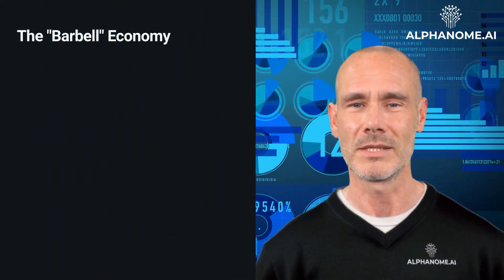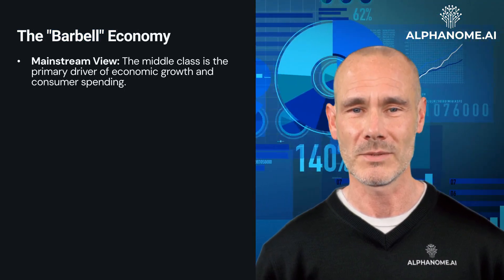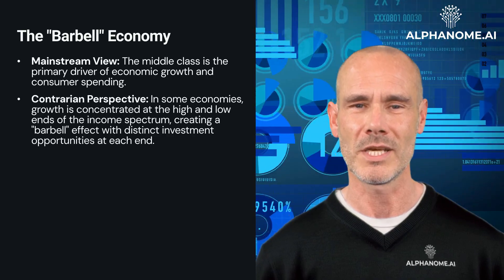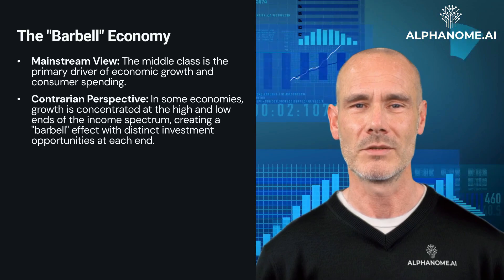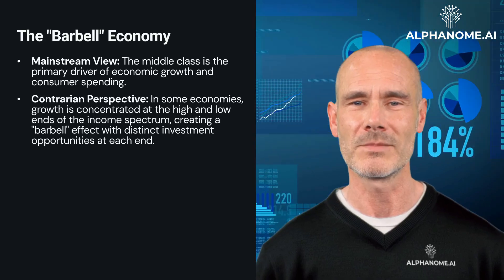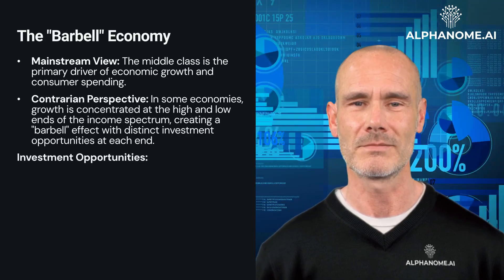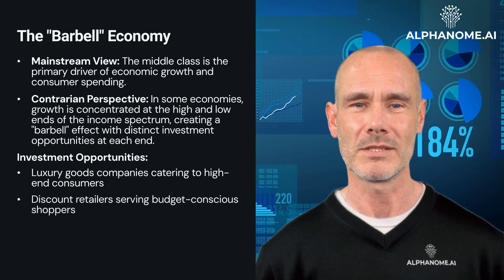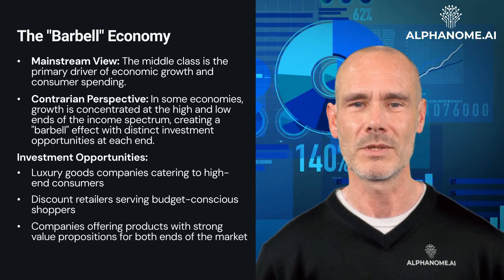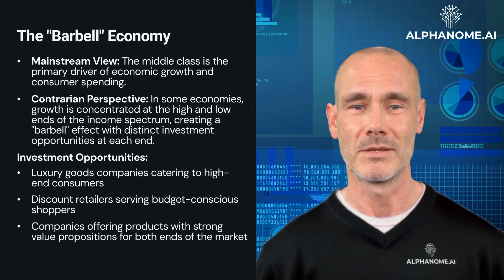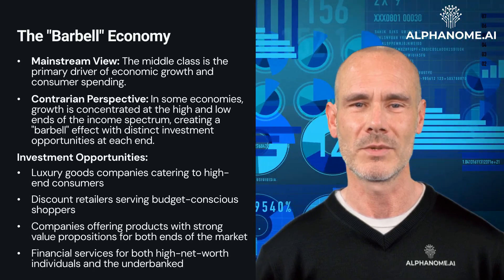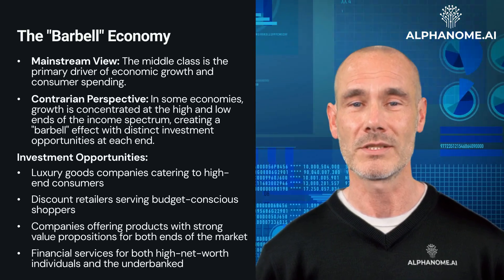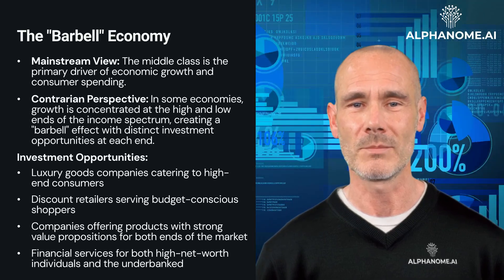The Barbell Economy. Mainstream view: the middle class is the primary driver of economic growth and consumer spending. Contrarian perspective: in some economies, growth is concentrated at the high and low ends of the income spectrum, creating a barbell effect with distinct investment opportunities at each end. Investment opportunities include luxury goods companies catering to high-end consumers, discount retailers serving budget-conscious shoppers, companies offering products with strong value propositions for both ends of the market, and financial services for both high-net-worth individuals and the underbanked. Example: investing in both LVMH (luxury goods) and Dollar General (discount retail) to capture opportunities at both ends of the barbell economy.